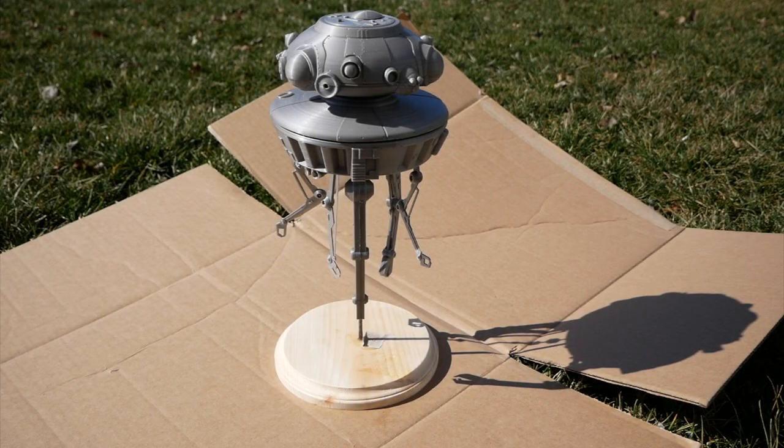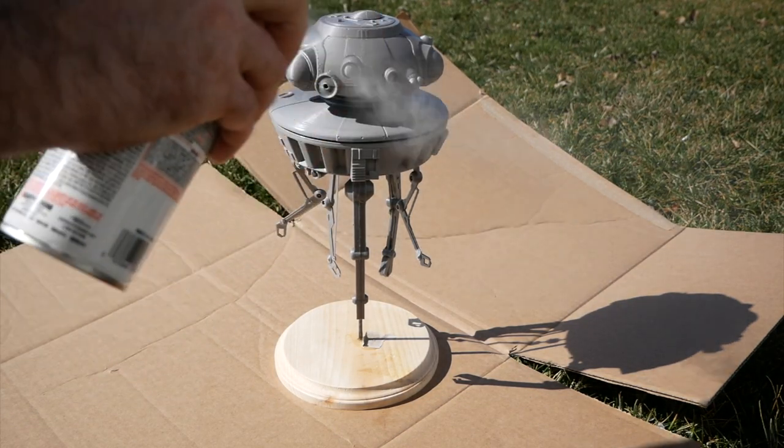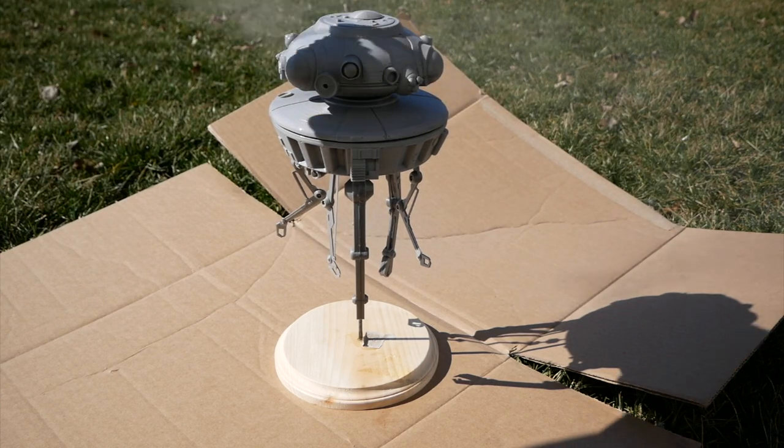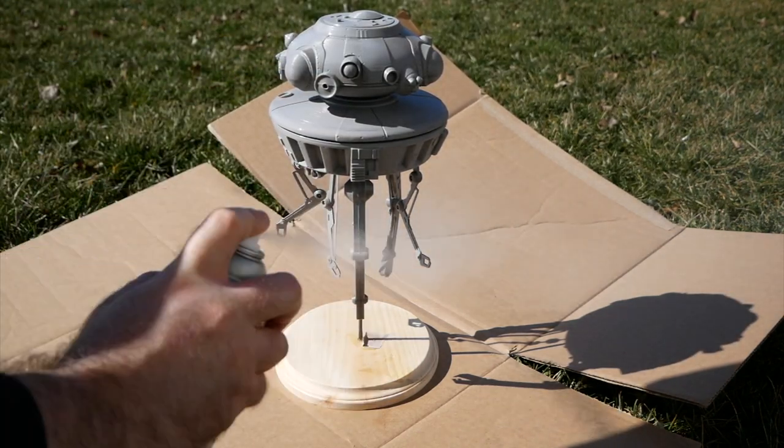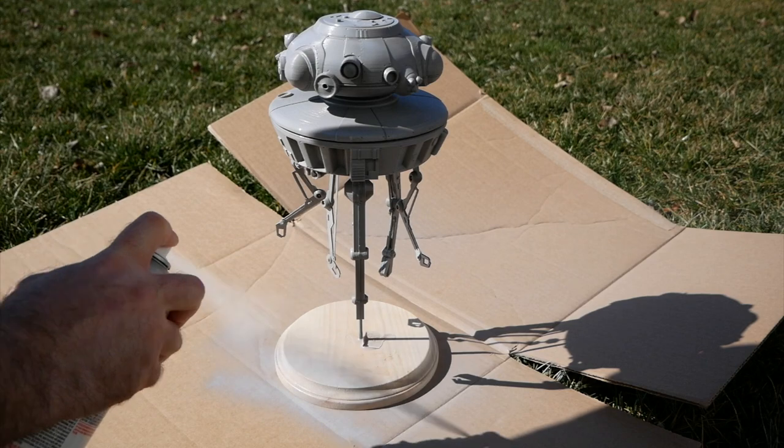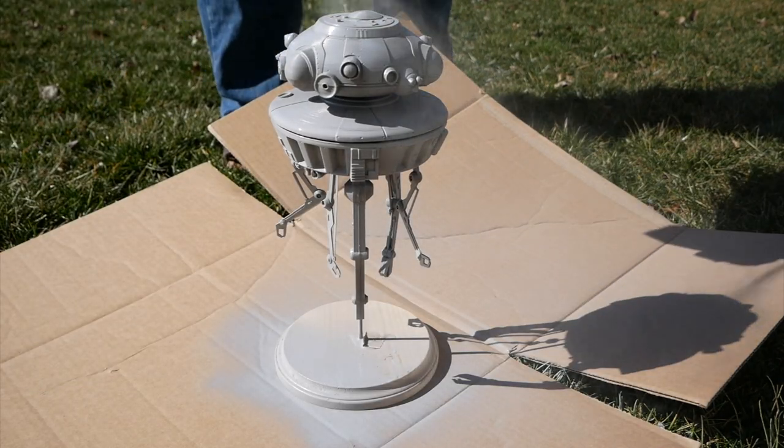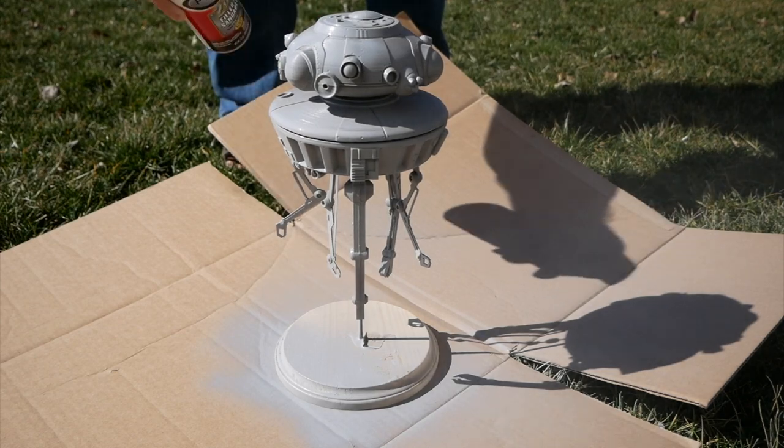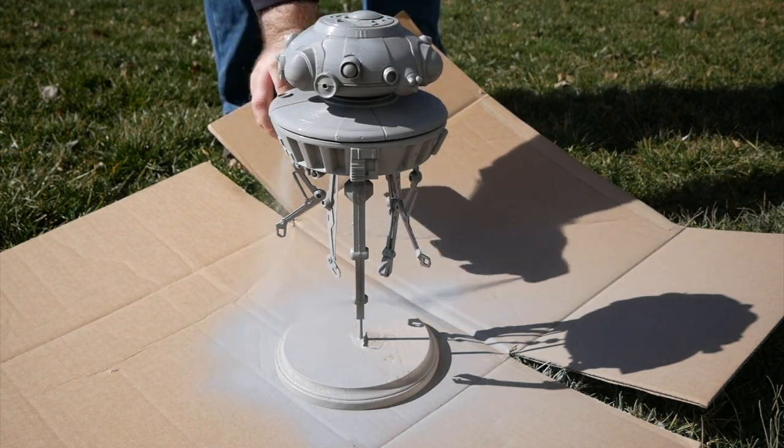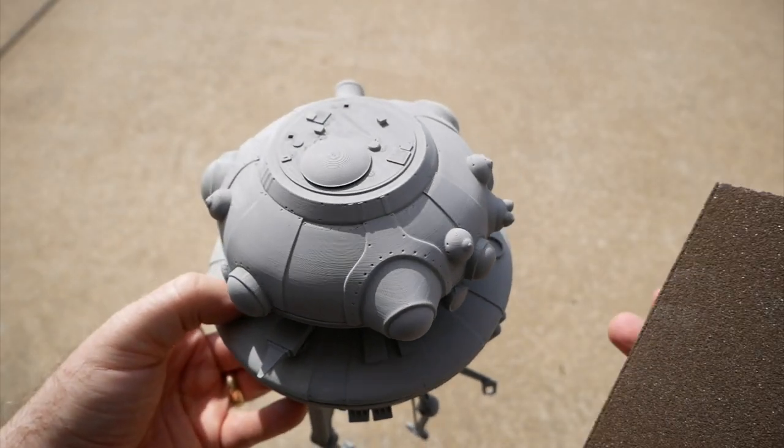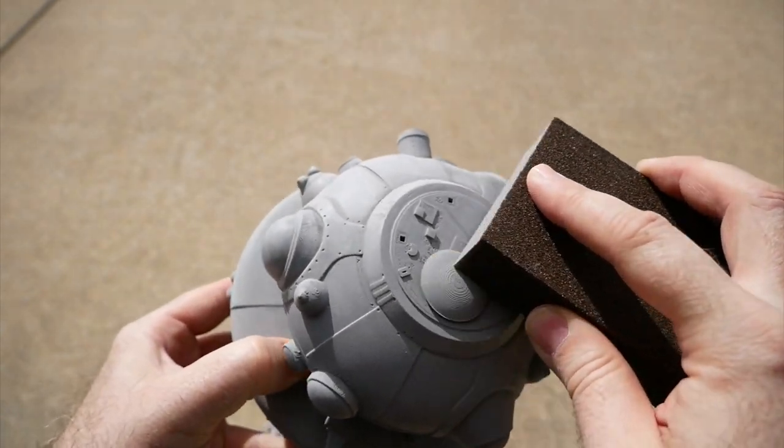Next, I primed the model with some handy dandy filler primer, which of course is intended to fill in a lot of the smaller gaps and hopefully layer lines that exist on the model. I went relatively heavy here just to try and fill in some of the layer lines and whatnot, but even afterwards you can see how it actually brings out a lot of the lines and shows you where you need to sand.